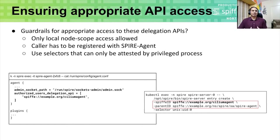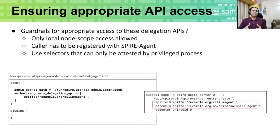These are high-security-risk APIs, so how do you ensure appropriate API access? The guardrails that a user of such APIs needs to put in place: first, only node-local access is allowed for these APIs by making use of Unix domain sockets. The caller has to be registered with the Spire agent. And one should ensure that the selectors to be used for attestation by this privileged process can only be attested by that privileged process. As shown below, the Cilium agent is marked as an authorized user for the delegation APIs, and the Cilium agent is a child ID for the parent SPIFFE ID of the Spire agent.